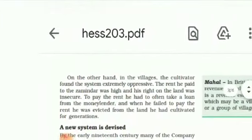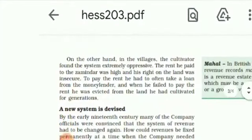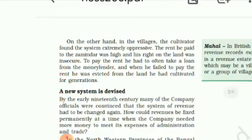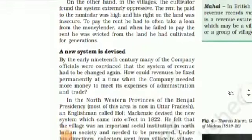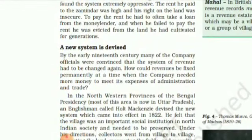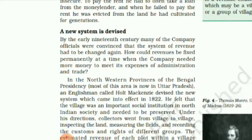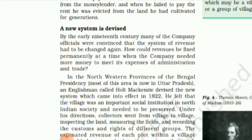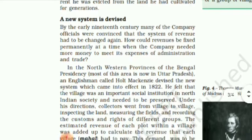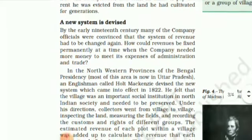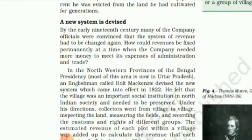On the other hand, in the villages, the cultivators found the system extremely oppressive. The rent paid to the Zamindars was high and the cultivator's right on the land was insecure. To pay the rent, he often had to take a loan from the moneylender. And when he failed to pay the rent, he was evicted from the land he had cultivated for generations.